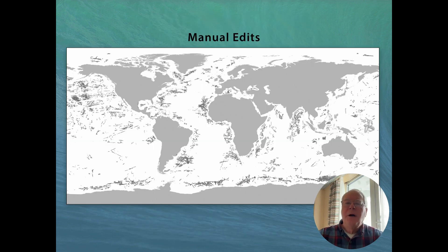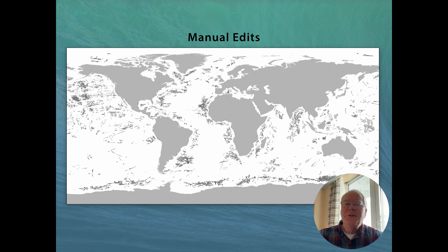These are my manual edits on the layer mask. I concentrated on the flat abyssal plains where the artifacts are most noticeable. Little editing was done on the more complex fracture zones associated with the mid-ocean ridges. You will notice that some of my edits are gray instead of black. In those cases, I was unsure if I was seeing artifacts or an actual feature, so I diminished them partially — kind of split the difference.